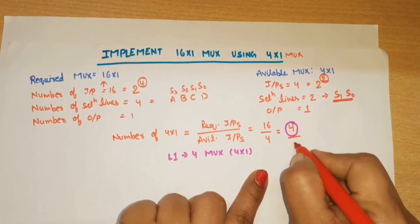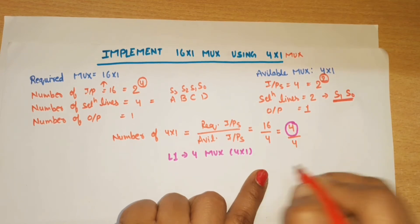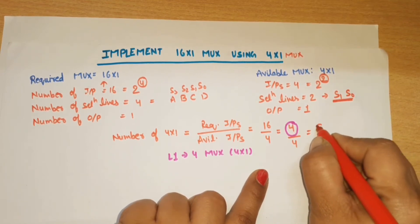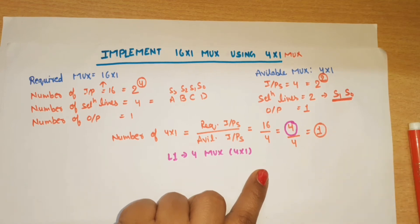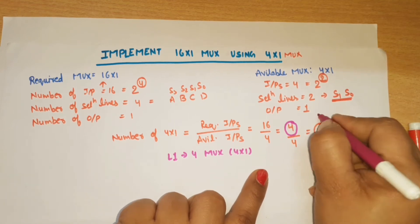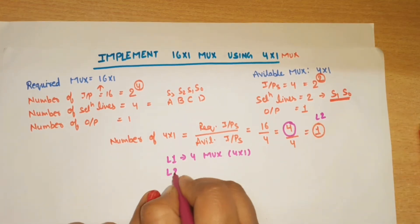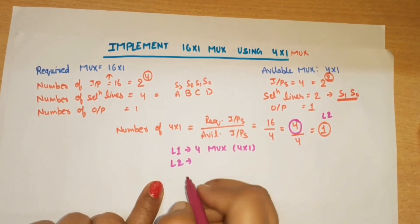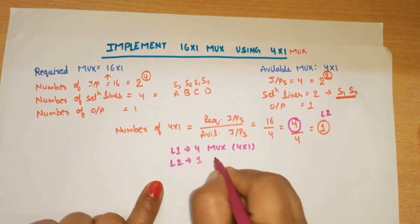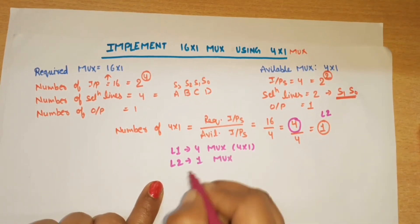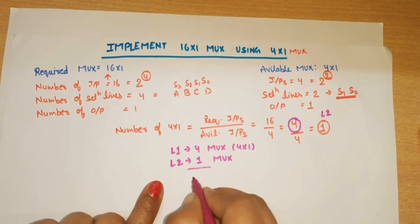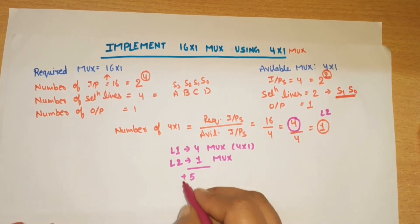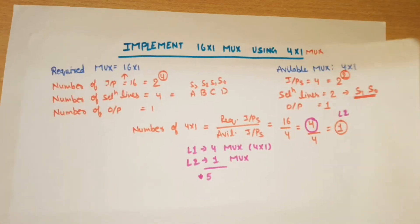Again we divide: at the next level we have 4 divided by 4, which gives 1. This means at Label 2 we use 1 mux. So the total number of muxes is 4 plus 1, which equals 5.